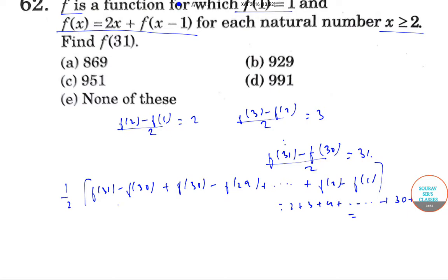And over here, f30 cancels out, f29 and all cancel out, and on the LHS, we are left with half f31 minus f1 and this summation from 2 to 31.